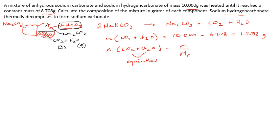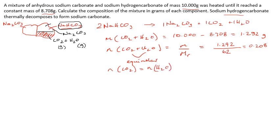From the balanced equation, the molar ratio of CO₂ to H₂O is 1:1, so we treat them as one combined formula unit. The combined Mr is 44 (CO₂) + 18 (H₂O) = 62. Using moles = mass / Mr: 1.292 / 62 = 0.208 moles combined. Because they're equimolar, the moles of CO₂ and the moles of H₂O are each half of that: 0.104 moles each.